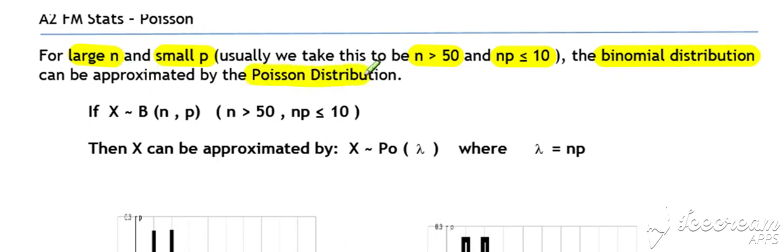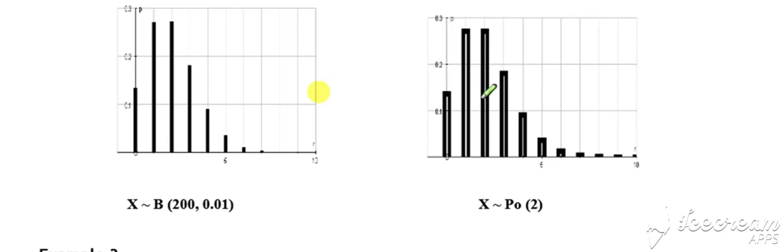This approximation requires we work out lambda as the mean of our binomial, where lambda is equal to n times p. The two diagrams show how this works.